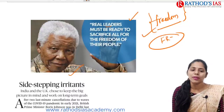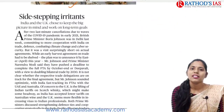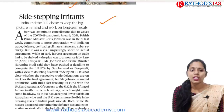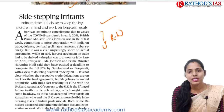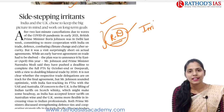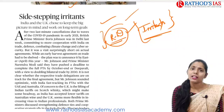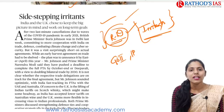Now let us try to see the first topic. It is regarding India-UK relations. The title says 'side-stepping irritants.' The central theme of this article says that India and the UK chose to keep the big picture in mind and work on long-term goals. We need to know about recent developments between India and the UK, and what are the irritants or concerns between India and the UK. This article is important from GS paper 2 under international relations.